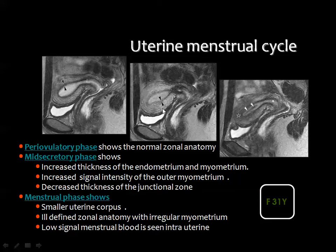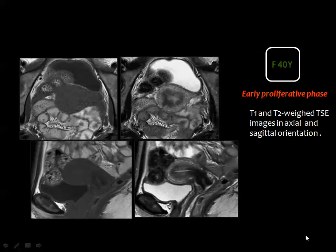In the mid-secretory phase there is appreciable thickening of the myometrium, relative distension of the uterine cavity, and thinning of the junctional zone. In the menstrual phase, blood clots are visible inside the uterine cavity. In T1-weighted images you only see the shadow of the uterus without zonal anatomy detail, whereas in T2-weighted axial and sagittal images the zonal anatomy is clearly visible.